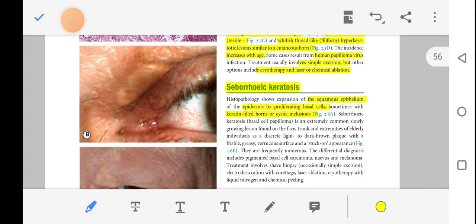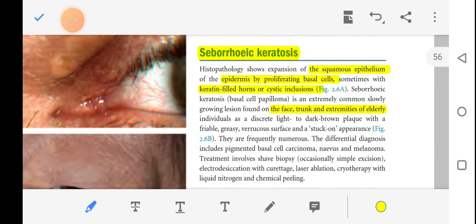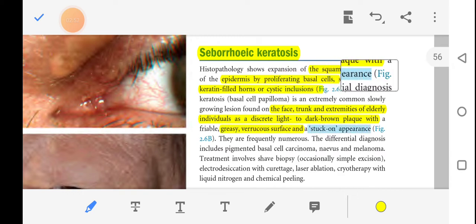Basal cell papilloma is an extremely common slowly growing lesion which is found in face, trunk and extremities of elderly individuals and appears as a discreet light to dark brown plaque with a friable, greasy, verrucous surface and stuck-on appearance.